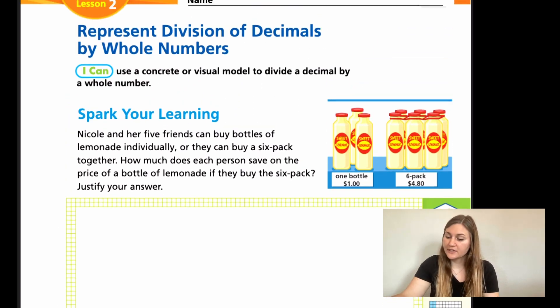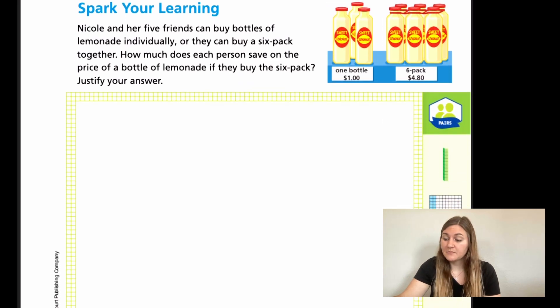We have a spark your learning that says Nicole and her five friends can buy bottles of lemonade individually, or they can buy a six pack together. How much does each person save on the price of a bottle of lemonade if they buy the six pack? The problem is telling you that buying the six pack is the better deal. We just need to prove why.